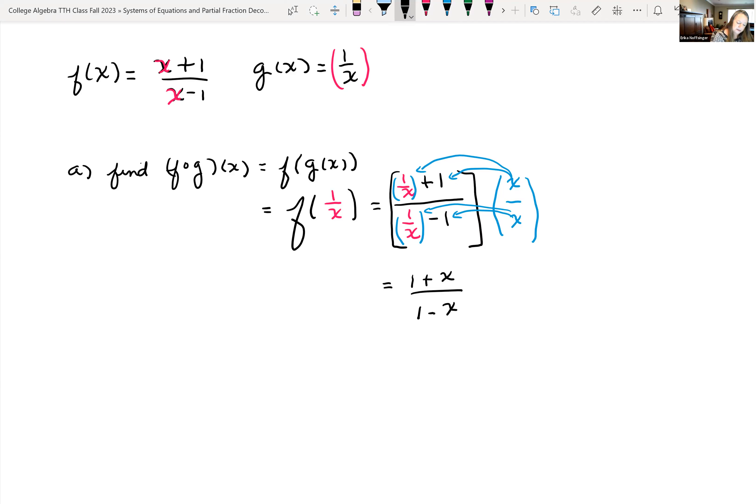So there's the composition of f of g of x. So we want to find the domain of the composition. When we're finding the domain of the composition, we can't just look at the answer. That might give us the domain of that composition, but it's possible that it doesn't.